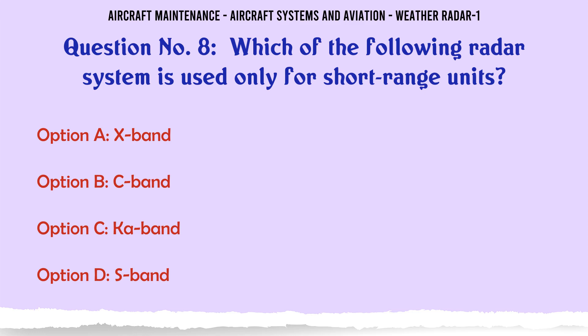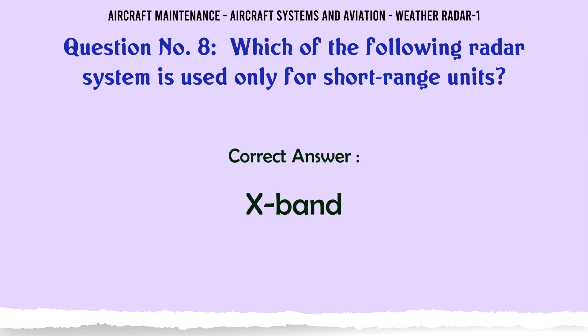Which of the following radar systems is used only for short-range units? A: X Band. B: C Band. C: Car Band. D: S Band. The correct answer is X Band.